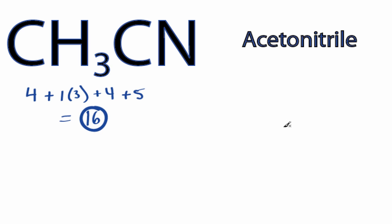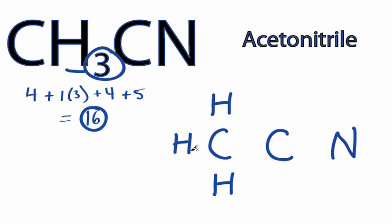Carbon's the least electronegative, so that's going to go at the center. We'll put the other carbon here, and then the nitrogen on this side. We can tell by the way it's written that the CH3 means we're going to have hydrogens around this carbon right here, and the nitrogen will be here on the other side. So we have three hydrogens around this carbon here, we have our central carbon, and then we have our nitrogen over here.